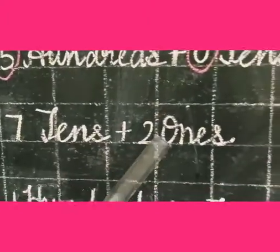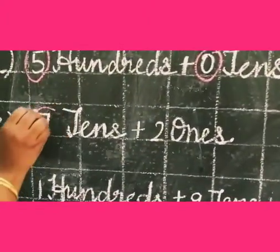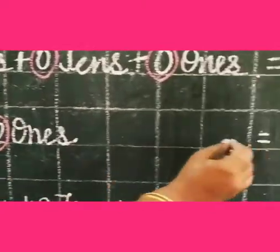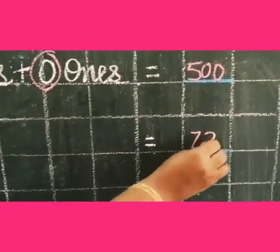Next, 7 tens plus 2 ones. Circle the numbers: 7, 2. So 7, 2 equals 72.